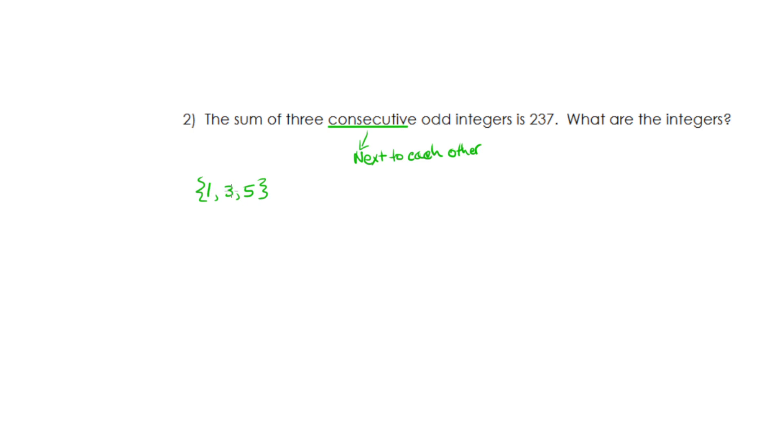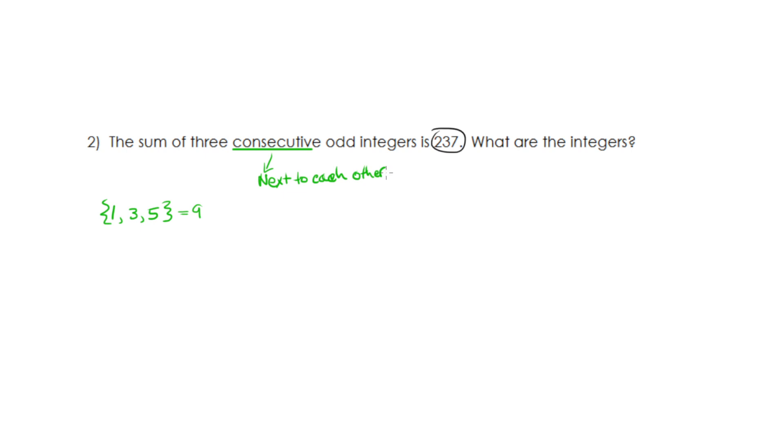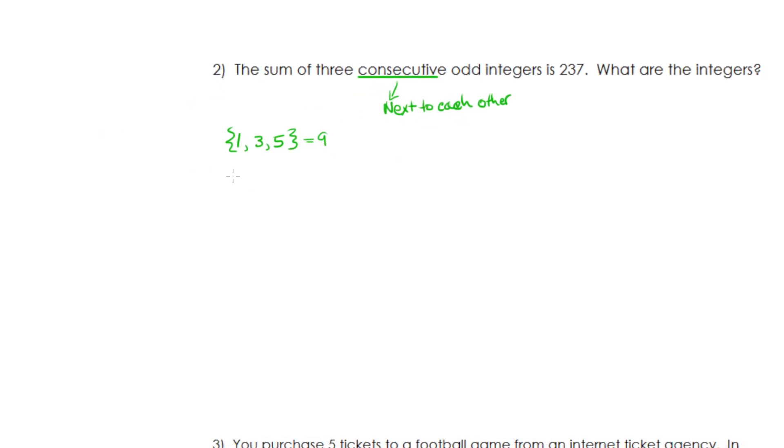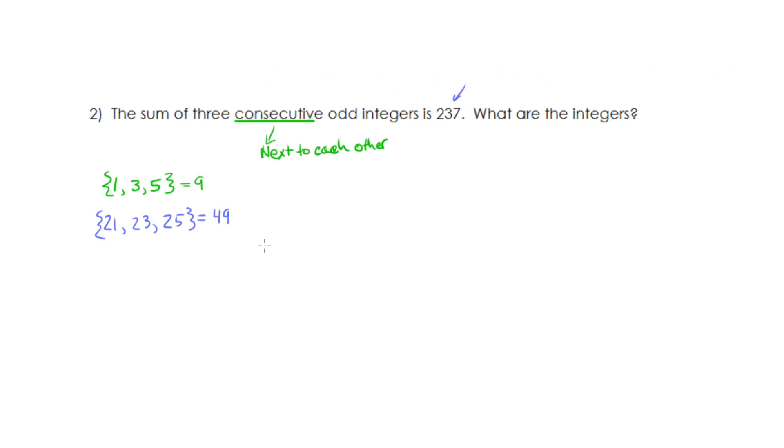But the problem is one plus three is four, four plus five is nine. So my total here is nine, but I wanted a total of 237. So let's try a few other ones. Let's try 20 as another example. So is 20 odd? No. So I have to go to 21, then 23, and 25. These would be the ones in consecutive order. So 21 plus 23 would be 44, 44 plus 25 would be 69. I'm still pretty far away from that goal that I want.